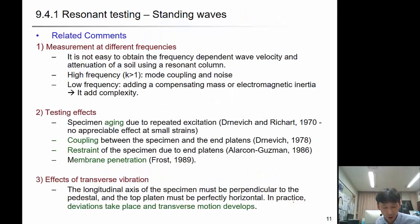There are comments selected from literature about resonant column test. It's not easy to obtain frequency-dependent wave velocity and attenuation of soil using resonant column. At high frequency, mode coupling and noise occurs. In low frequency, the addition of compensating mass or electromagnetic inertia adds complexity, so it's not easy to calibrate. Testing effect is soil also aged due to repeated excitation. The oscillation, repeating the torsion, makes the specimen harden or soften.